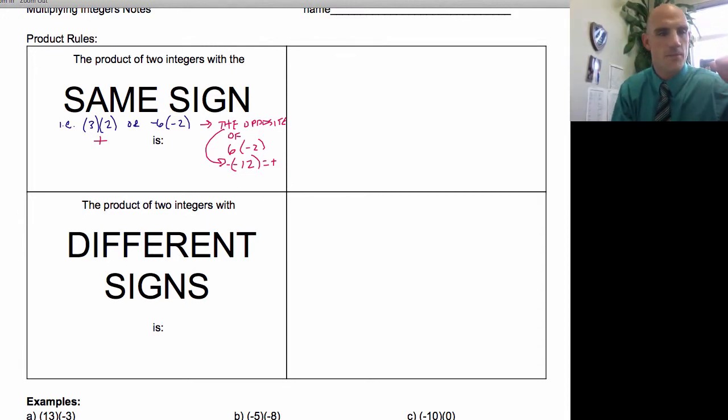The gist is if I have the same sign, meaning both positive or both negative, the answer, the product is positive. So here's two examples. Three times two equals six. Positive, positive, positive.